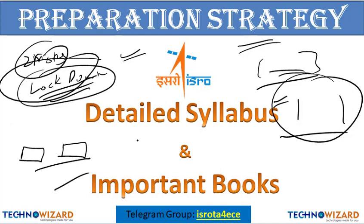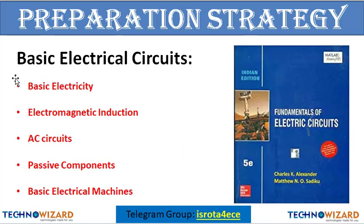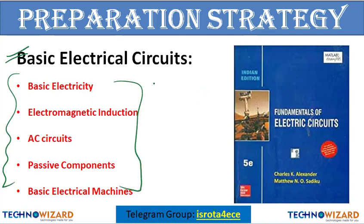To have a detailed explanation about the syllabus, important books, objective type questions, and each and every thing. First, the first topic is basic electrical circuits — in this, five topics are covered: basic electricity, electromagnetic induction, AC circuits, specific components, and basic electric machines.